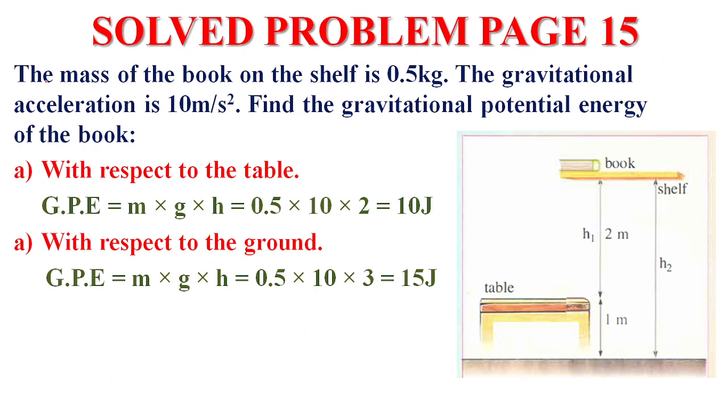Solve problem page 15. The mass of a book on the shelf is 0.5 kg. The gravitational acceleration is 10 meters per second squared. Find the gravitational potential energy of the book with respect to the table. First, we write the rule. GPE equals mass times gravity times height. Mass 0.5, gravity 10, and the height of the book with respect to the table is 2 meters. We get 10 joules.